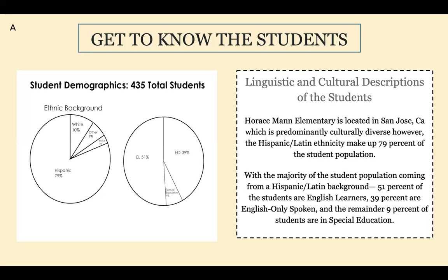For the linguistic and cultural descriptions of the students: Horace Mann Elementary is located in San Jose, California, which is predominantly culturally diverse. However, the Hispanic and Latin ethnicity makes up 79% of the student population. With the majority of the student population coming from a Hispanic Latin background, 50% of the students are English learners, 39% are English only, and the remaining 9% of the students are in special education.